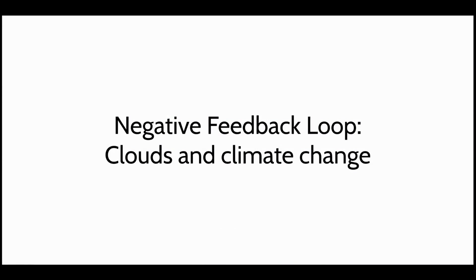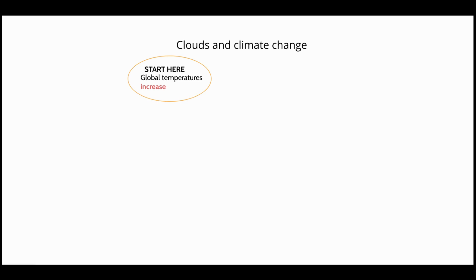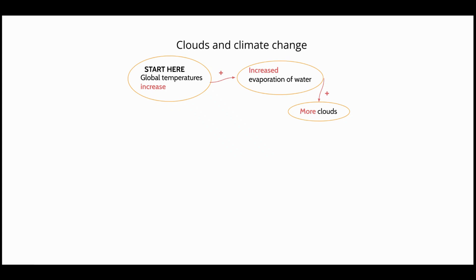This negative feedback loop will look a little different. It is happening today, and it involves the clouds that form due to climate change somewhat slowing the effects of climate change. As global temperatures increase due to increased carbon dioxide in the atmosphere, more water will evaporate. On average, more clouds form around the world as more water evaporates.